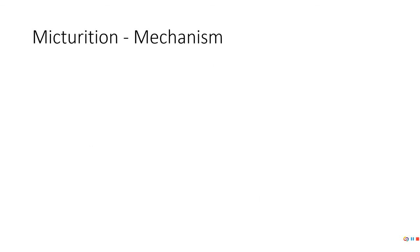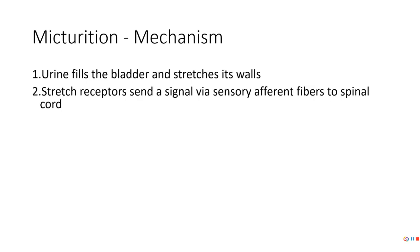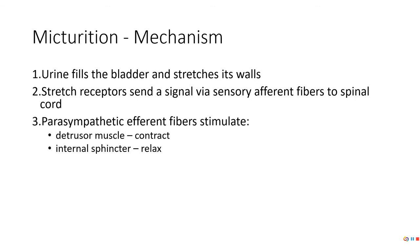All right, so how does this work? It's pretty straightforward. Urine fills the bladder, stretches out its walls. The stretch receptors send a signal along an afferent neuron to the spinal cord. This activates some parasympathetic fibers that cause something called the detrusor muscle to contract and your internal sphincter to relax.